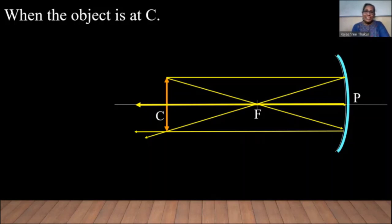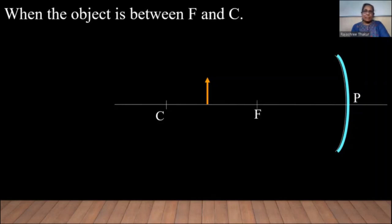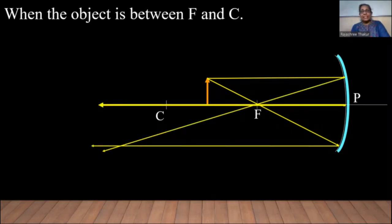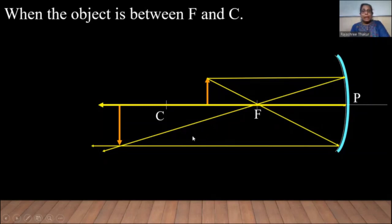Now let us keep the object between F and C. When the rays are incident on the mirror, they get reflected, and this time we get the image beyond C. You can see it is real, inverted, and also enlarged. If this object goes closer and closer to F, the image goes further and further away from C, and also the image is enlarged.